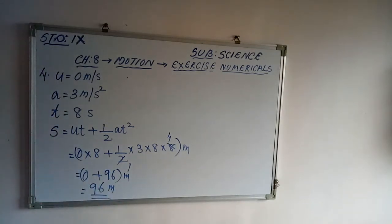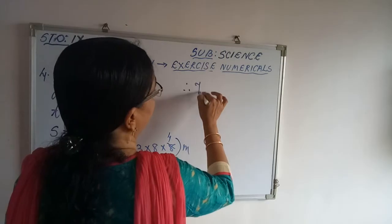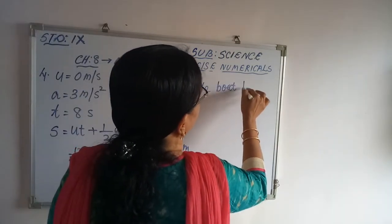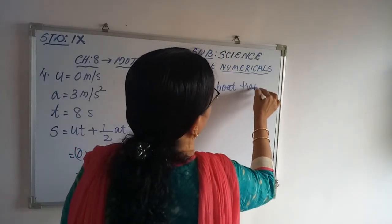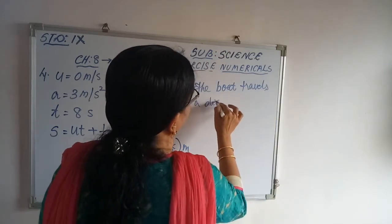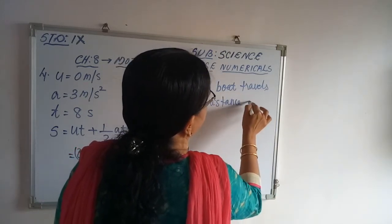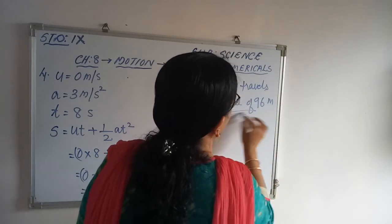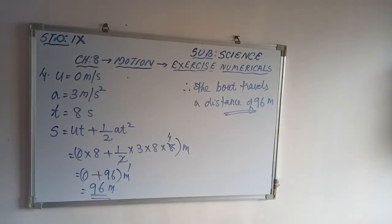Therefore, the boat travels a distance of 96 meters. This is a direct substitution into the kinematic equation.